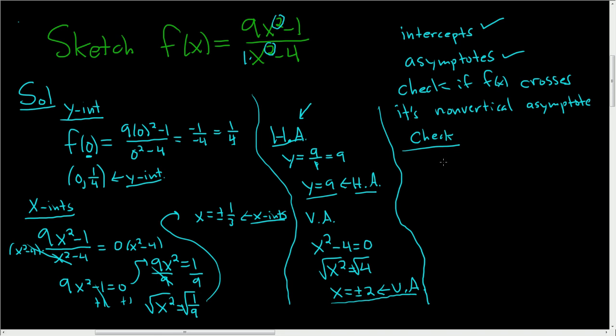Well, you take your entire function: 9x squared minus 1 over x squared minus 4. And if our function is going to cross the non-vertical asymptote, it must share a y-value with that asymptote. So it must be equal to 9. So we solve this equation by multiplying both sides by x squared minus 4. So here we get 9x squared minus 1 equals 9x squared minus 36.